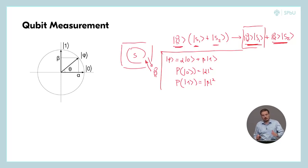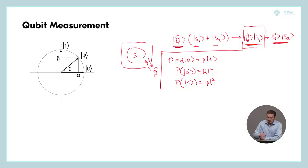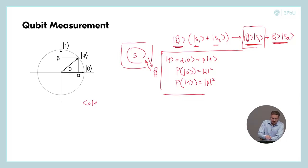So the closer vector phi is to one of the basis vectors, the bigger is the probability to obtain that basis vector as the measurement outcome. Actually, we can compute this dot product to see that ⟨0|φ⟩ = ⟨0|(α|0⟩ + β|1⟩) = α⟨0|0⟩ + β⟨0|1⟩, which is alpha, using linearity on the second argument.